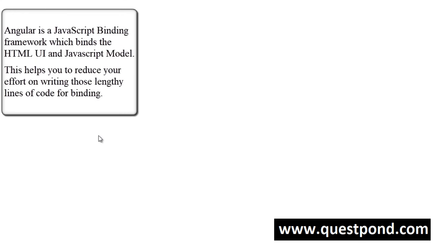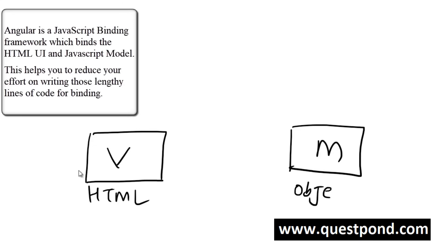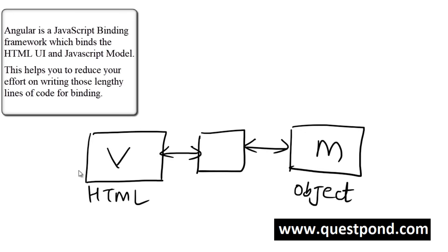Angular is a JavaScript UI binding framework which helps you to bind your view with the model. Normally you have your view — which is HTML — and your model, which is a JavaScript object. If you want to bind the view with the model you write a lot of binding code in between: when you type on the UI it should send the message to the model, and when something changes in the model you have to update the UI. This binding code — what many people call the view model — is taken care of by Angular.